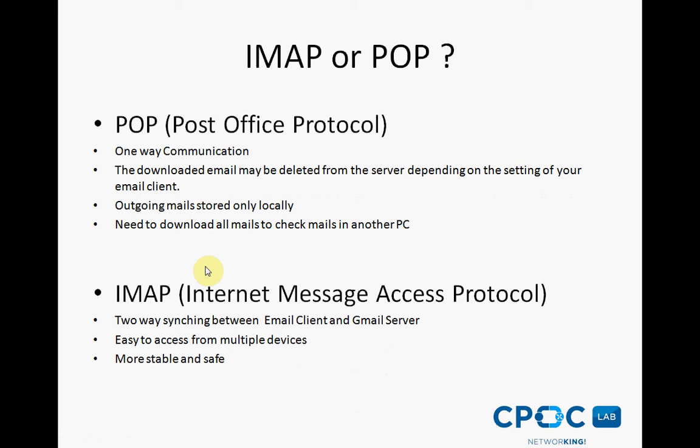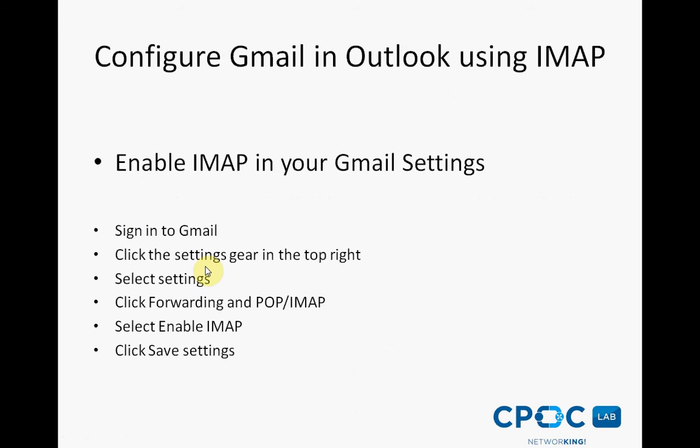This means when you log into Gmail using the browser, actions you perform on Outlook and mobile devices will instantly and automatically appear in Gmail. IMAP also provides a better method to access your mails from multiple devices. If you check email at work, on your mobile phone, and again at home, IMAP ensures that new email is accessible from any device anywhere.